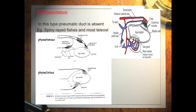In the physoclistous condition, the pneumatic duct is absent. For example, spiny-ray fishes and most teleosts have no pneumatic duct.